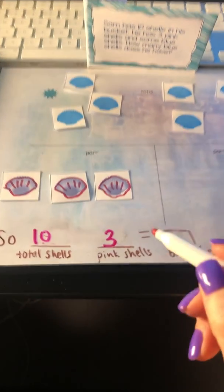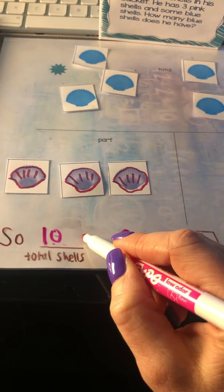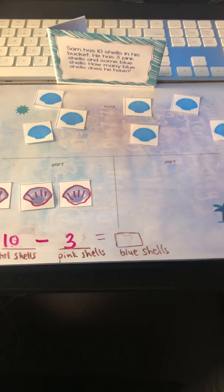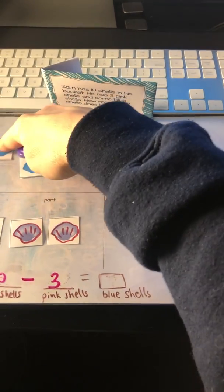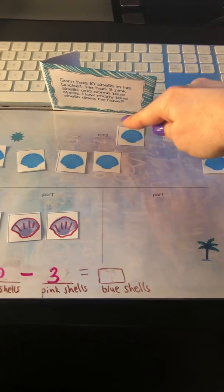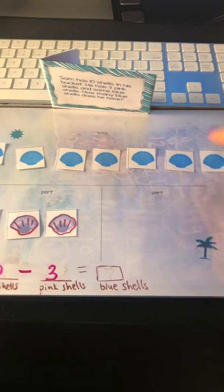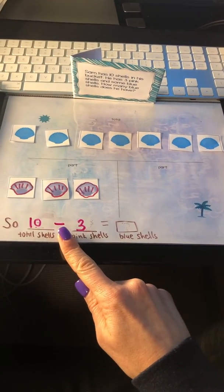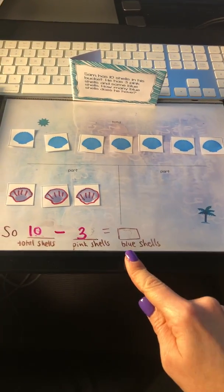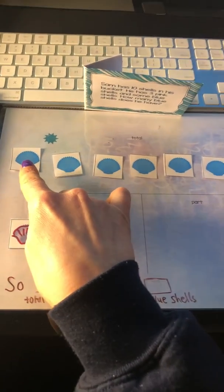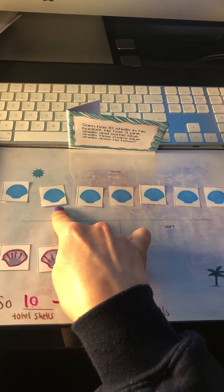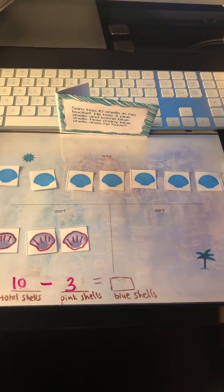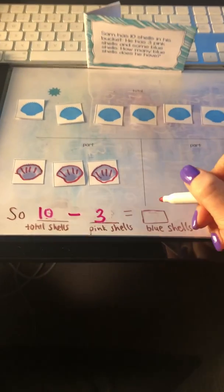So I took away, so if I'm taking away that means it's subtraction. So ten minus three equals, well let's count. Now I can count to see. Now I'm going to organize it in a nice neat line so it's easier for me to point and count and see where we're at. So ten total shells minus the three pink shells, let's see how many blue shells that leaves us with.